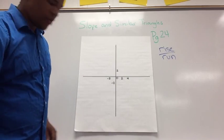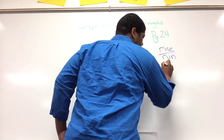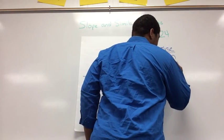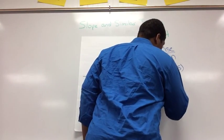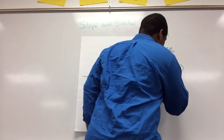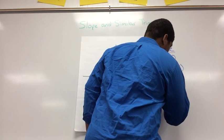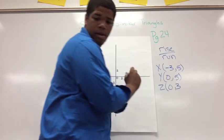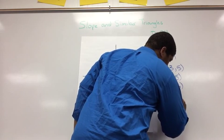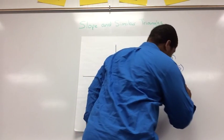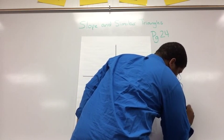So if I'm given the points, X is negative 3, 5, Y is 0, 5, Z is 0, 3, L is 6, 3, and P is 6, negative 1.